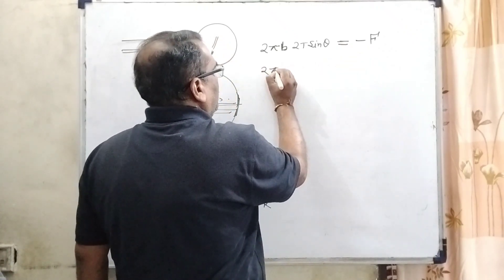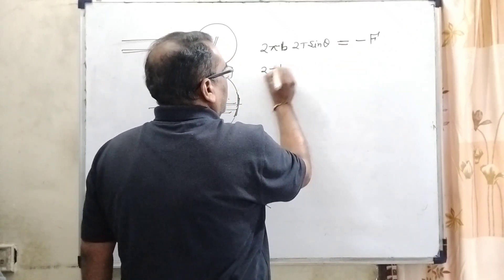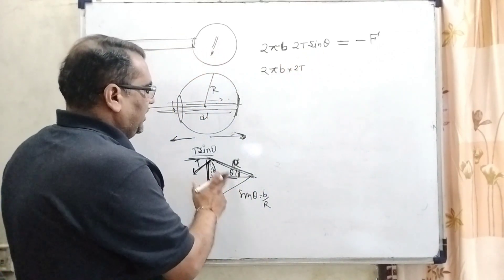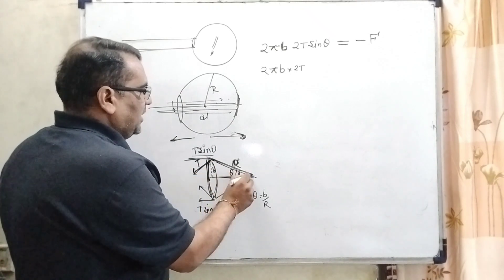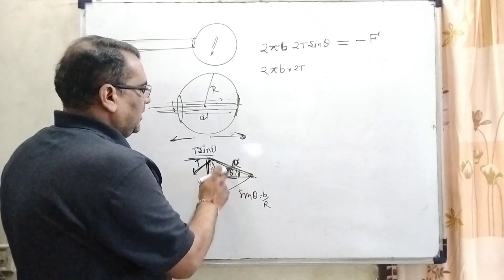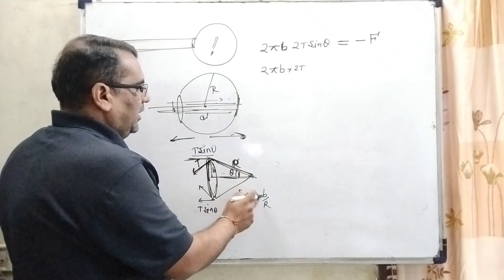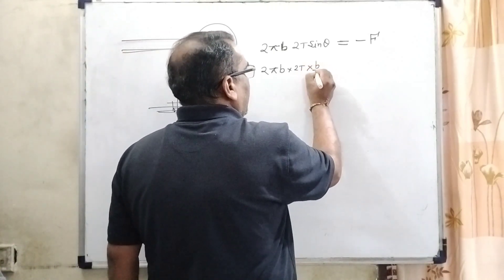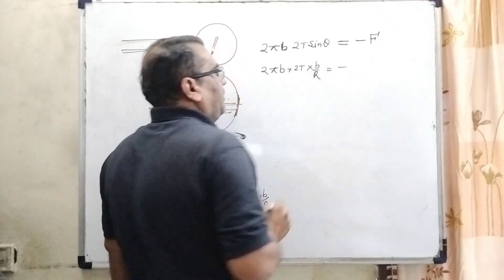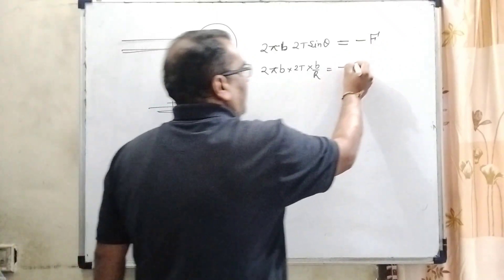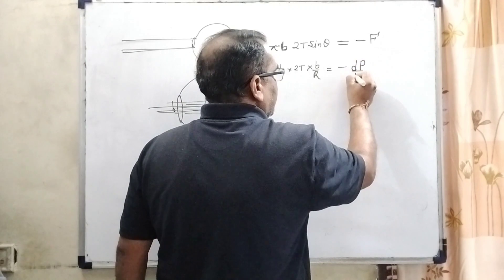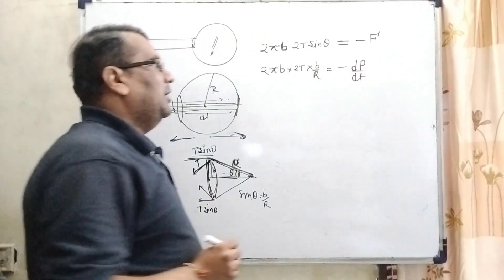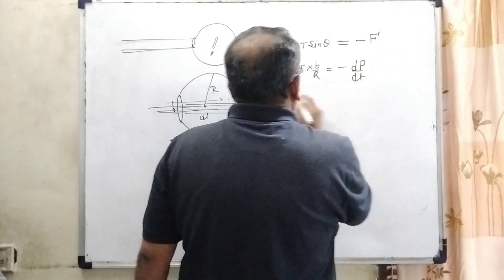Now 2πB times 2T sin θ. Here sin θ can be written as, from the center, sin θ equals perpendicular over hypotenuse which is R. So it can be written as B/R. And here, we have to write F in the form of momentum, change in momentum. Newton's second law: F equals dP/dt.